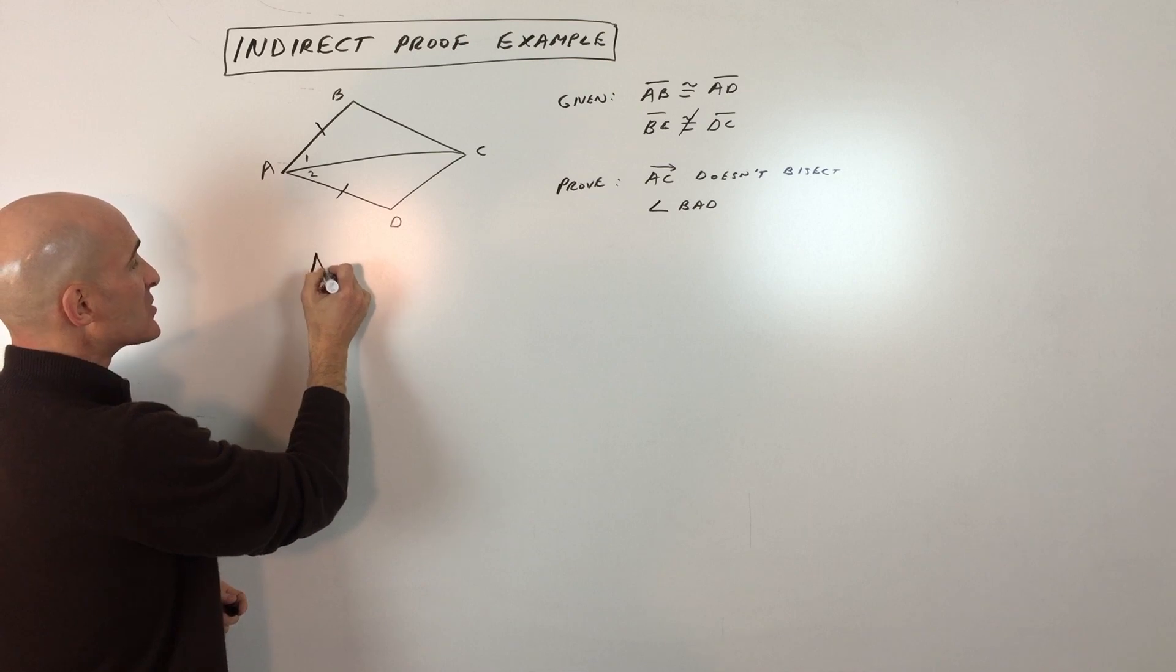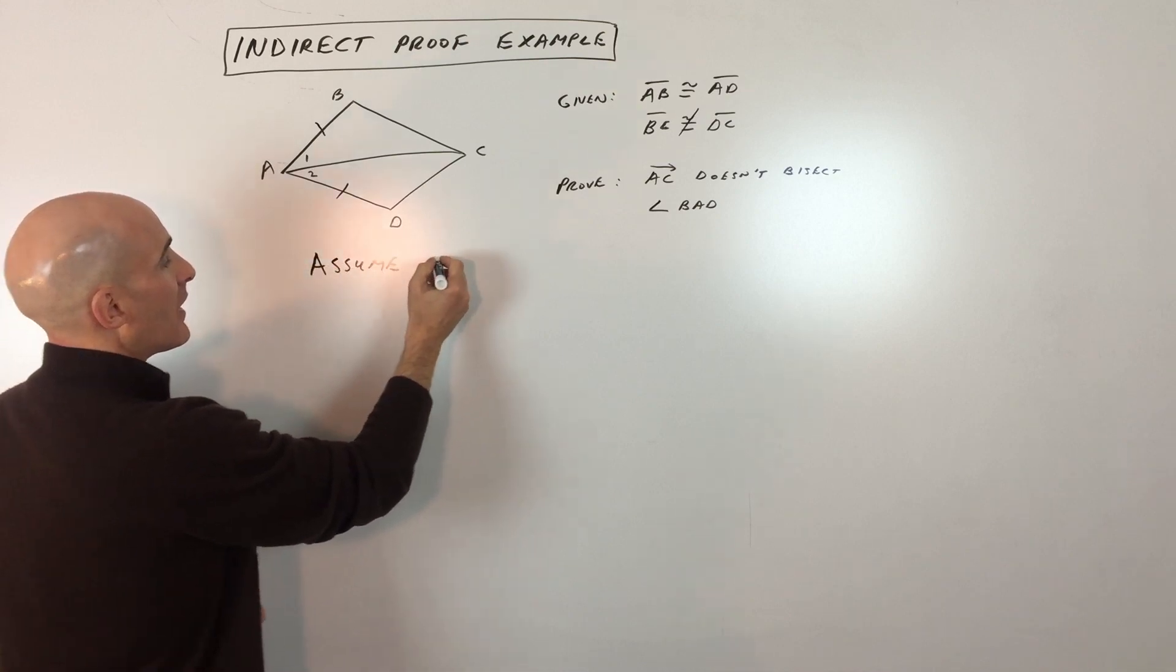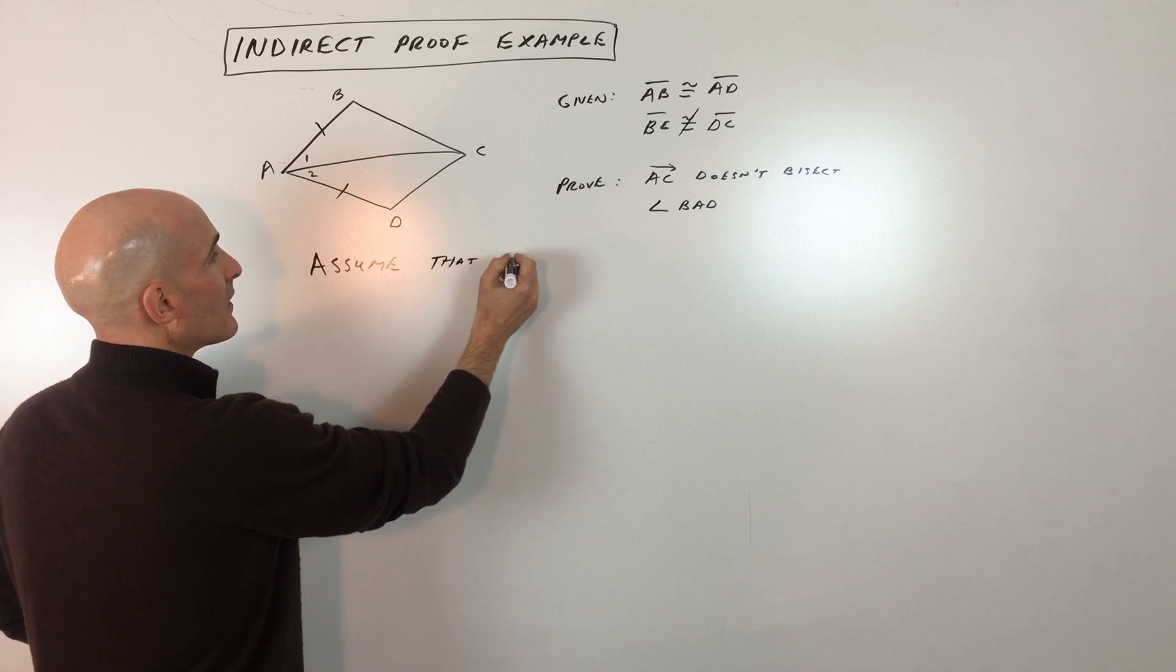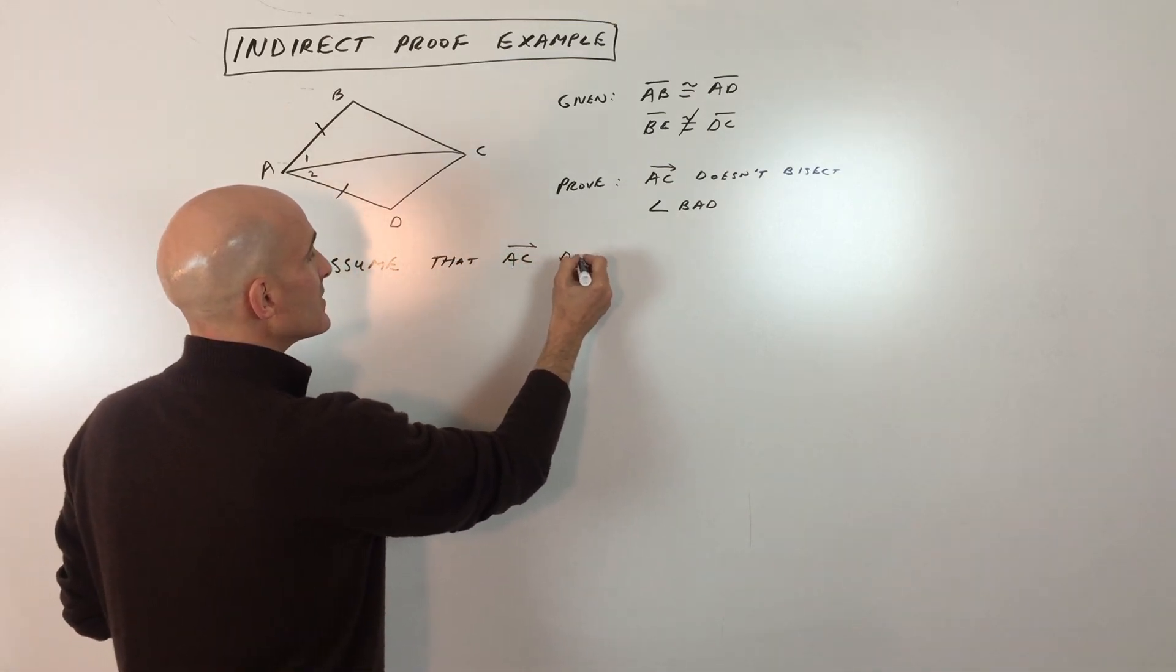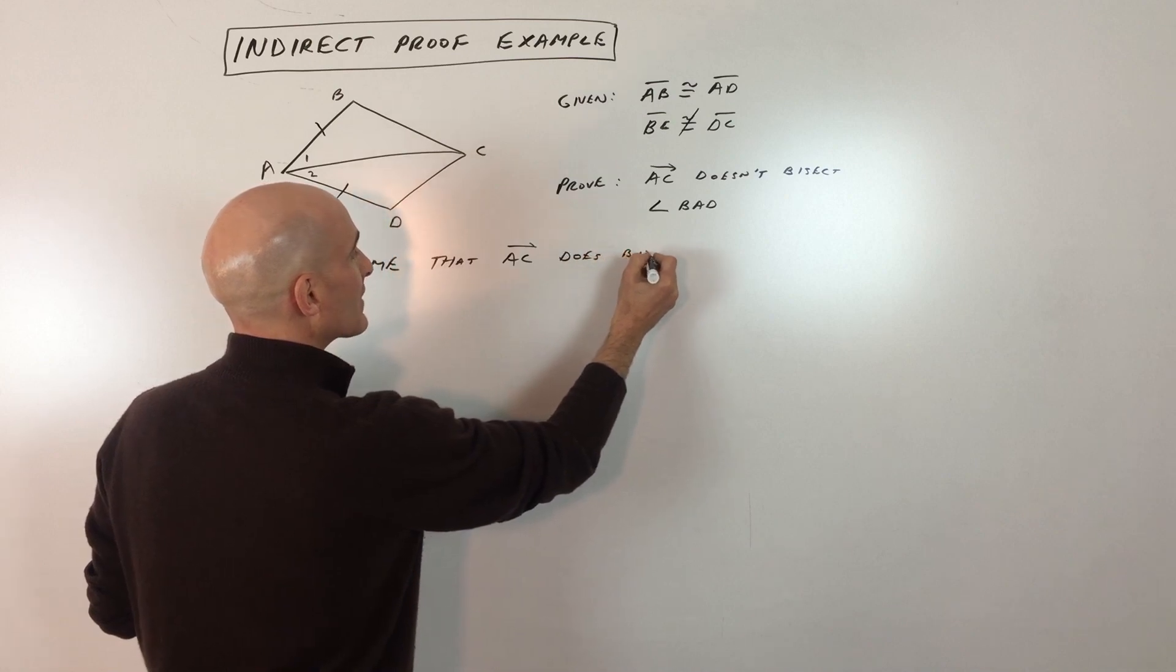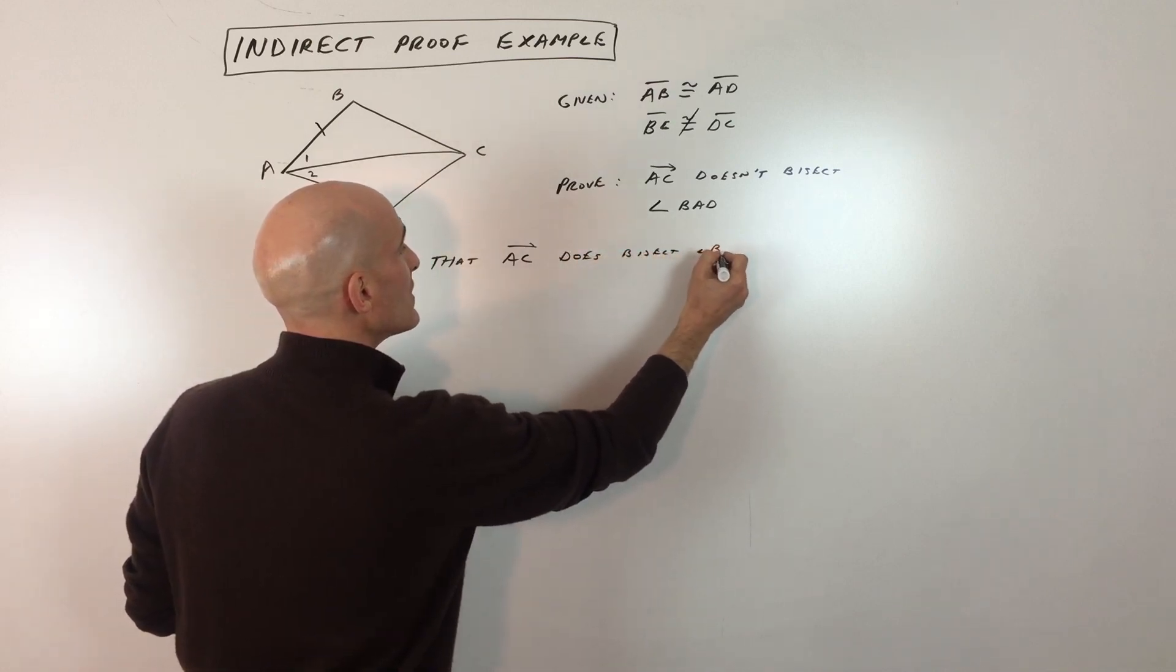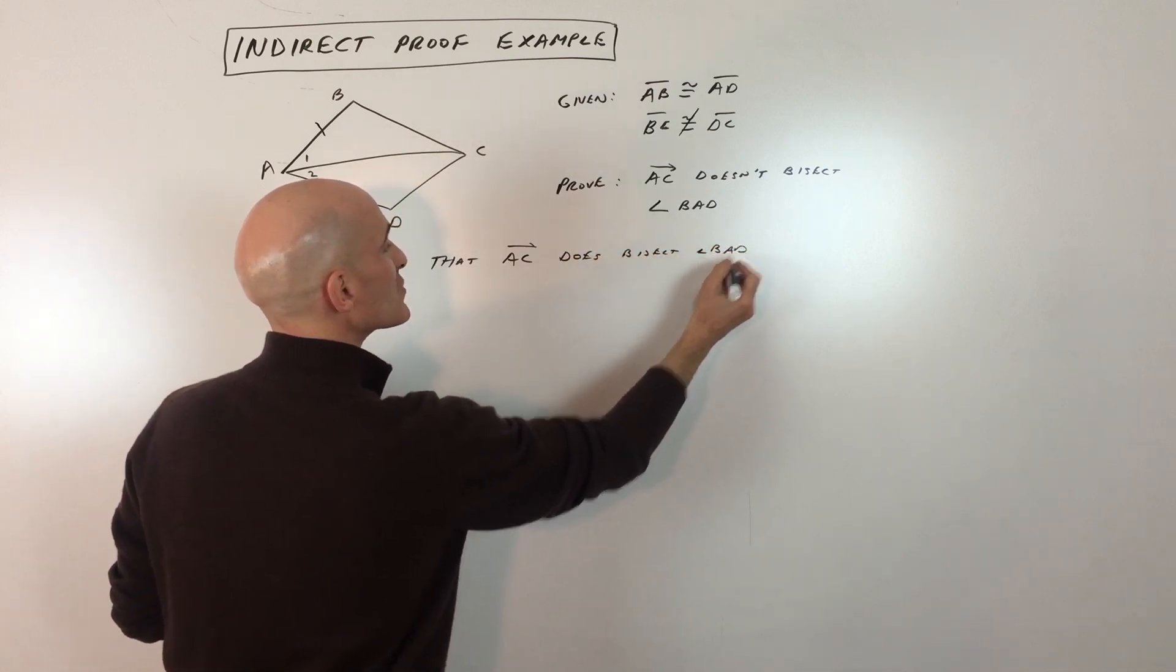Let's assume temporarily that ray AC does bisect angle BAD.